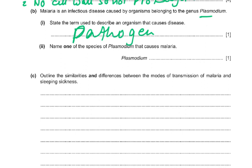The question then asks you to name one species of Plasmodium that causes malaria. You could have said falciparum, malariae, ovale, or vivax — any one of these four is acceptable.